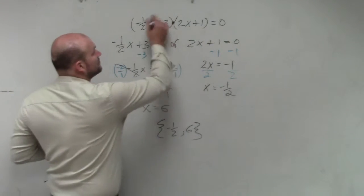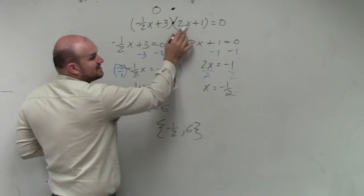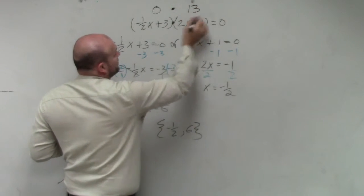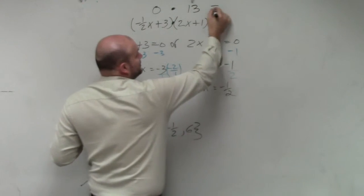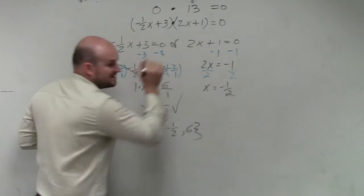So now, forget about plugging 6 in here. It's 0 times, well, let's plug it in. 2 times 6 would be 12 plus 1 is 13. 0 times 13, does that equal 0? Yes. So 6 works.